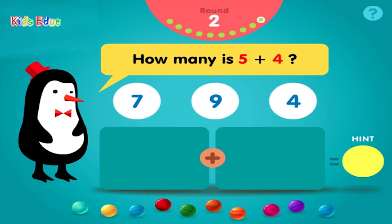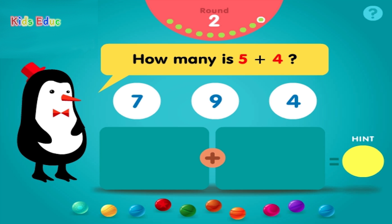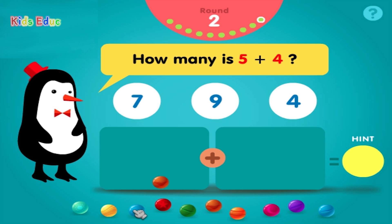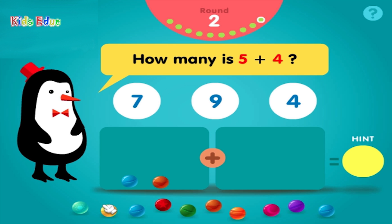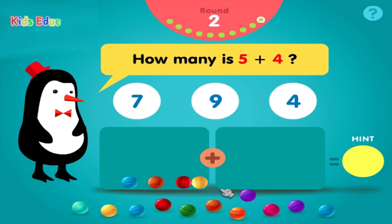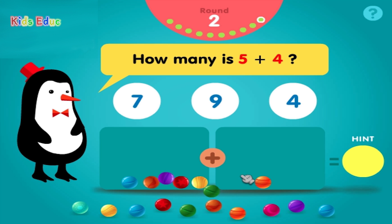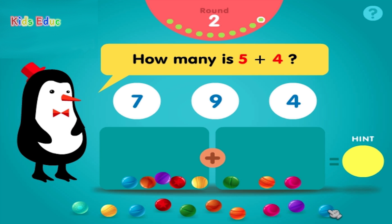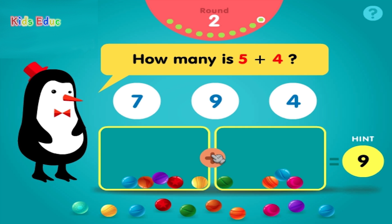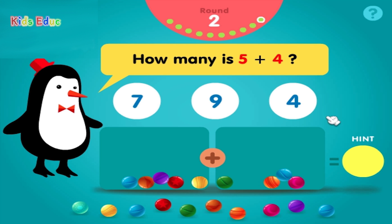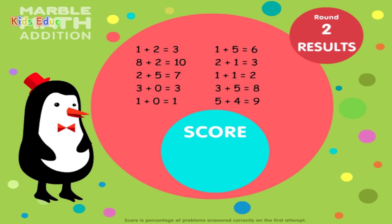How many is 5 plus 4? 1, 2, 3, 4, 5, plus 1, 2, 3, 4, equals 9. Awesome! Results!